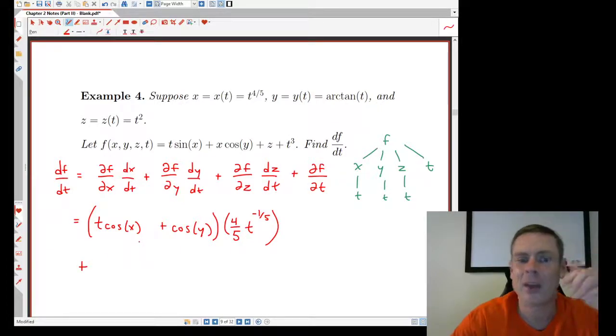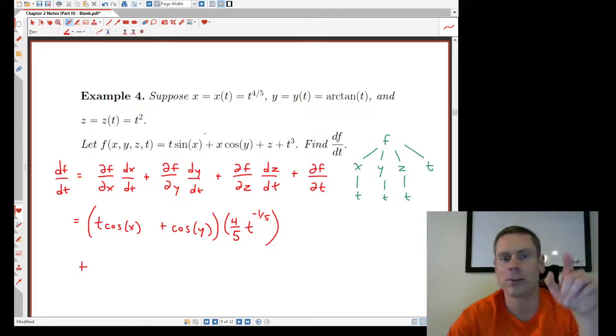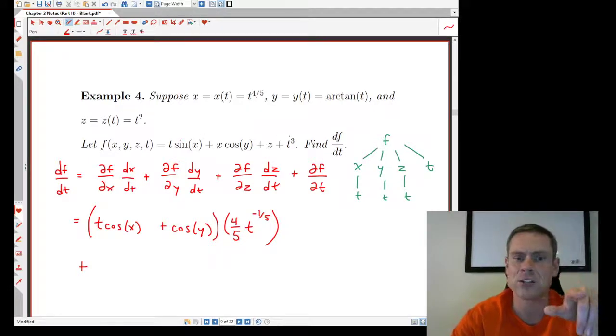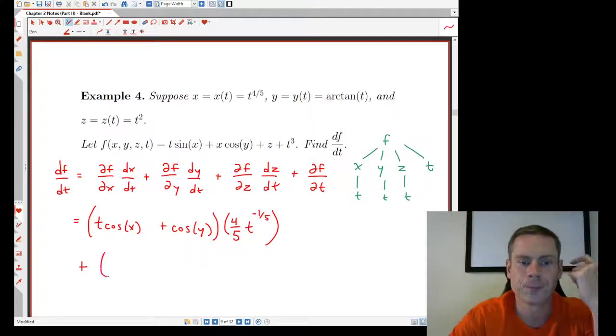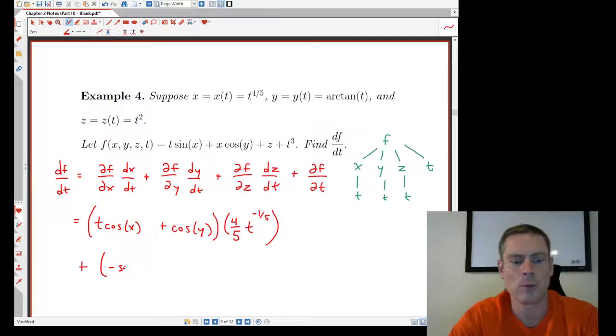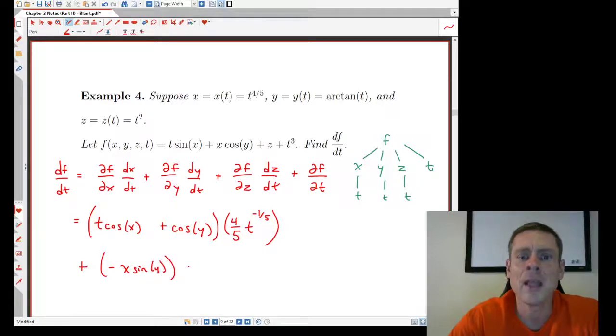So I need ∂f/∂y, dy/dt. So I'm going to look through this equation again, this function f. And there's only one thing that depends on y here. So the derivative with respect to y is going to be minus x sin of y. So minus, whoops, let's get this right, minus x sin of y. And I want to multiply that by dy/dt. And the derivative of an arctan function is going to be here, 1 over t squared plus 1, like that.